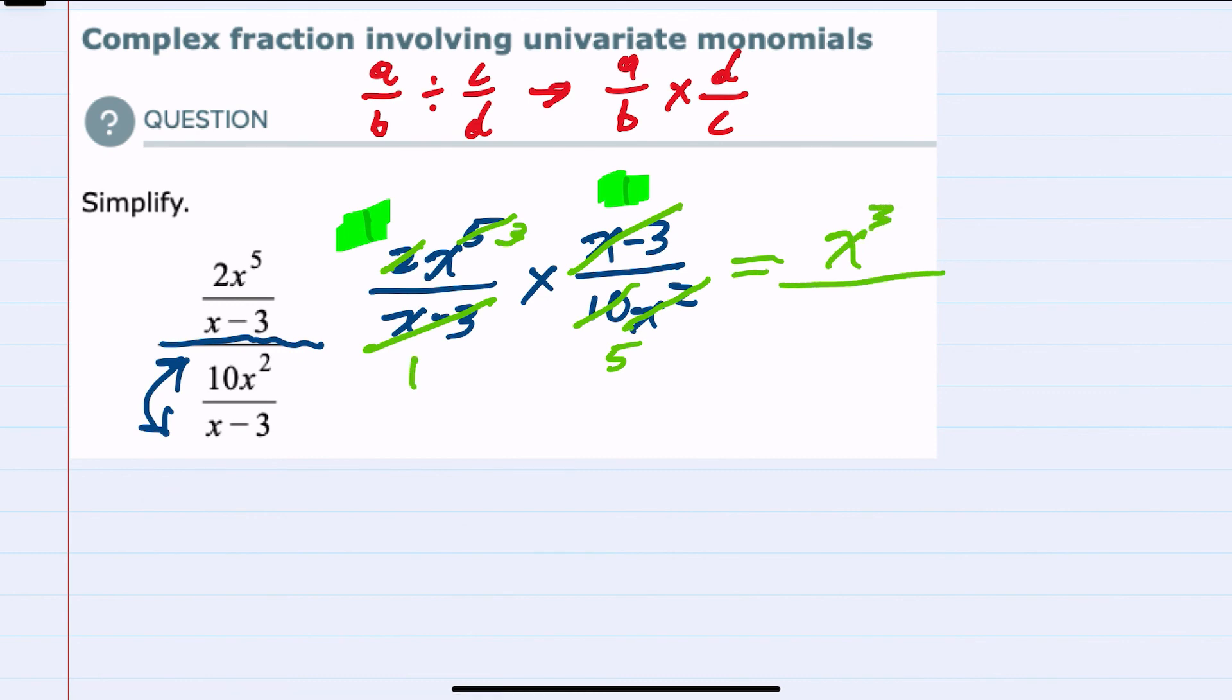This denominator is 1 since it's been canceled. 1 times 5 is 5, and those x's have already all been canceled, so our denominator is 5. And we have simplified this expression as much as we can.